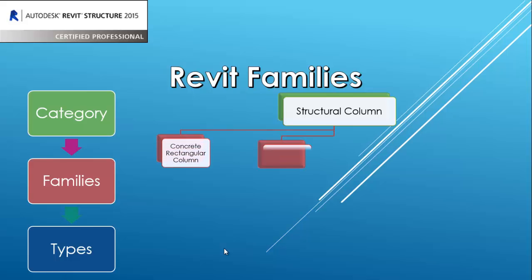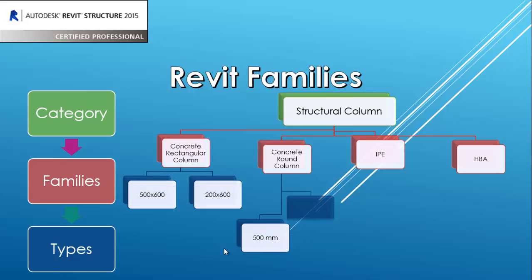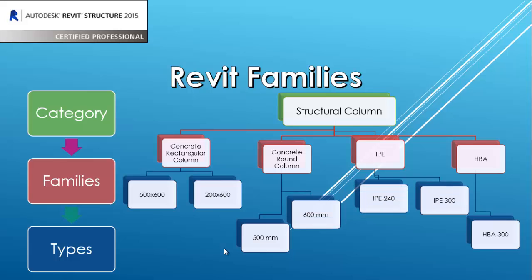We classify the elements inside one category into families. Each family has specific parameters that are the same. For example, concrete rectangular column — all of these columns will have a rectangular section and are made of concrete. Concrete round column — also concrete and round. IBE sections follow the Euro code, such as IBE, HBA, and so on. Under each family there are types — for example, concrete rectangular column 500×600 or 200×600. Each type has different values for each parameter; for the concrete rectangular column, all have width and length, and this length and width changes in each type.